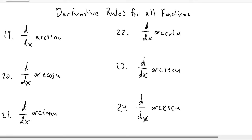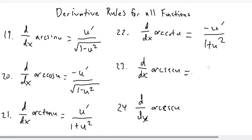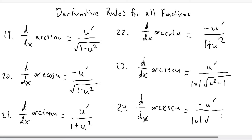For number nineteen, the derivative of arc sine of u, or inverse sine of u, is equal to u prime over the square root of one minus u squared. The derivative of arc cosine of u is negative u prime over the square root of one minus u squared. The derivative of arc tan, or inverse tangent, is u prime over one plus u squared. And the derivative of arc cotangent, or inverse cotangent, is negative u prime over one plus u squared. The derivative of arc secant is u prime over the absolute value of u times the square root of u squared minus one. And the derivative of arc cosecant is negative u prime over the absolute value of u times the square root of u squared minus one.